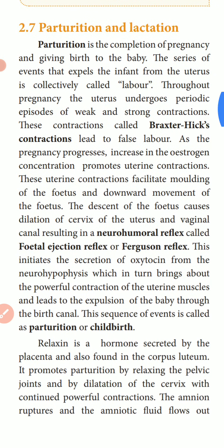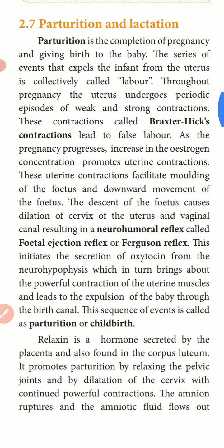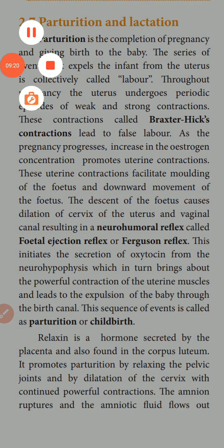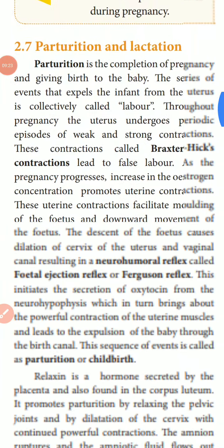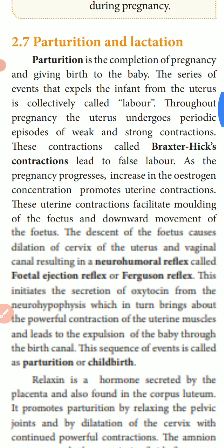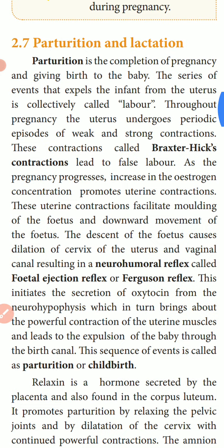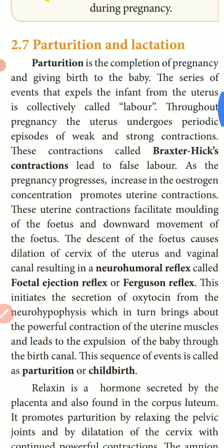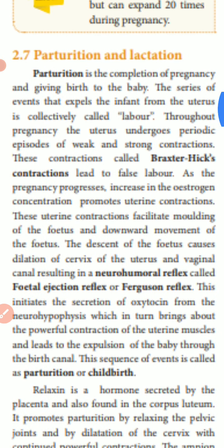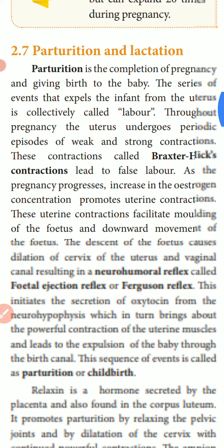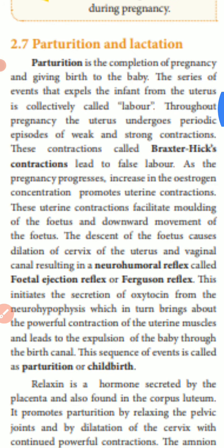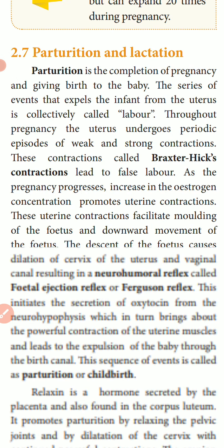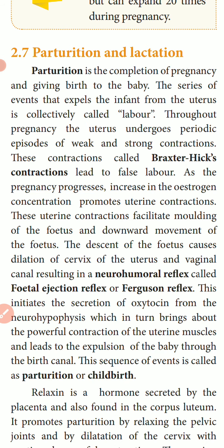Throughout pregnancy, the uterus undergoes periodic episodes of weak and strong contractions. These contractions are called Braxton-Hicks contractions. The uterine muscles undergo weak and strong contractions during fetal development, and this leads to false labor.